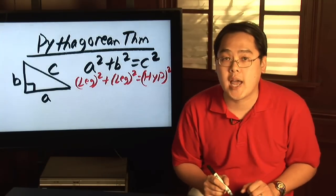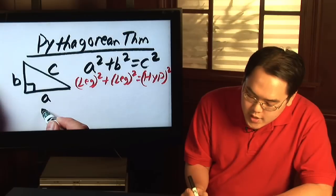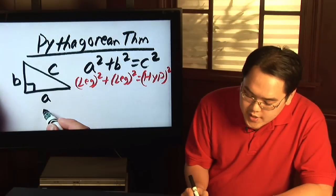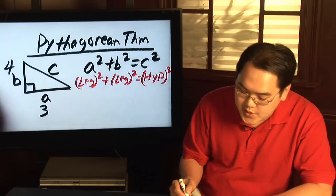Here's a case in point as to how you want to use the theorem. Suppose you wanted to know what C is and you're given that A is 3 and B is 4.